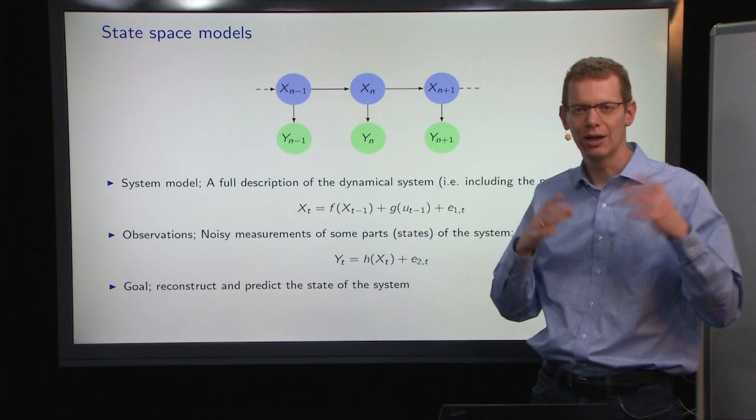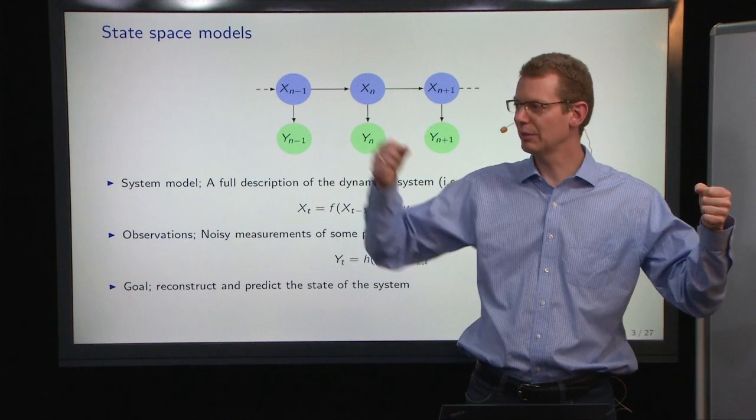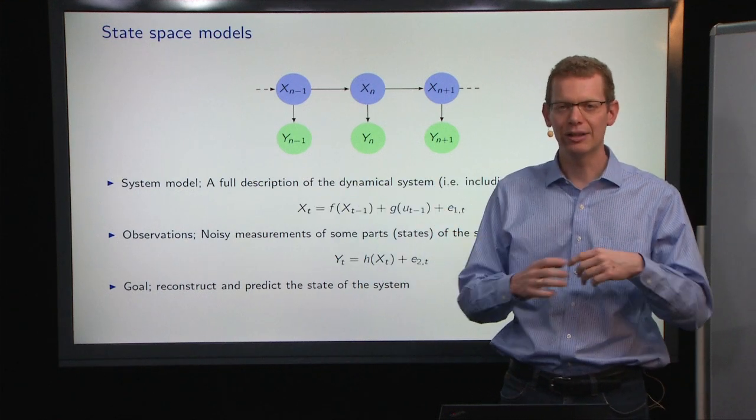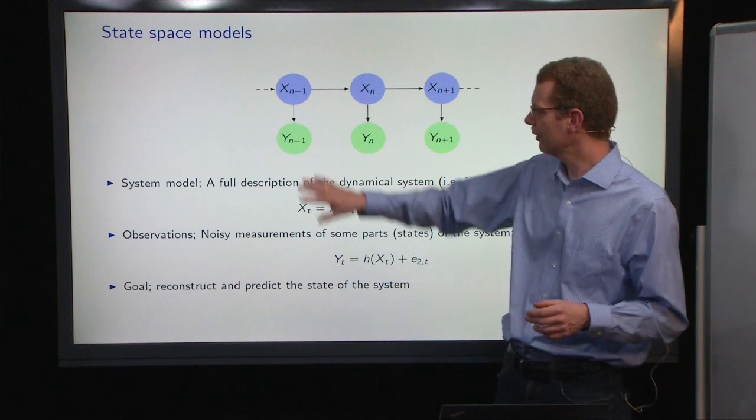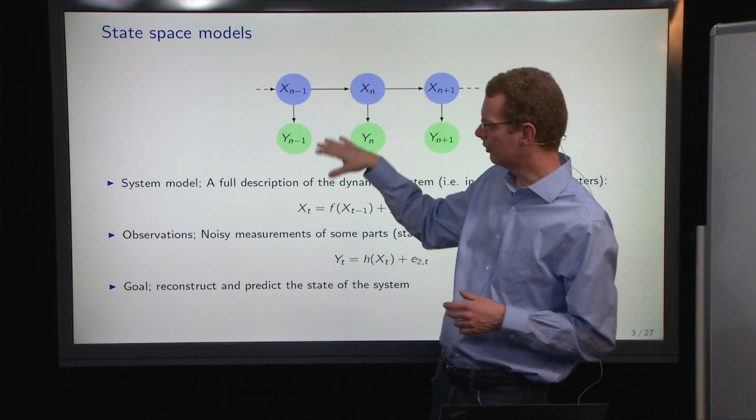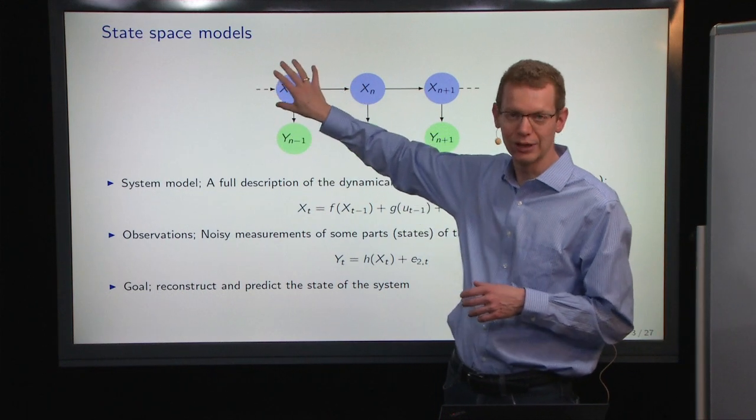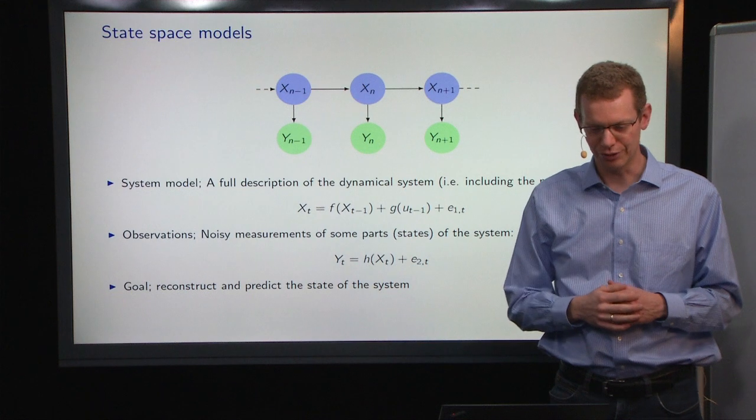Say that you're looking at the temperature of a house, you have a thermometer someplace here, maybe there, but you don't have it everywhere. So you have an underlying model that is the house, and then you have some observations somehow. And the question is how to make a model for the house.